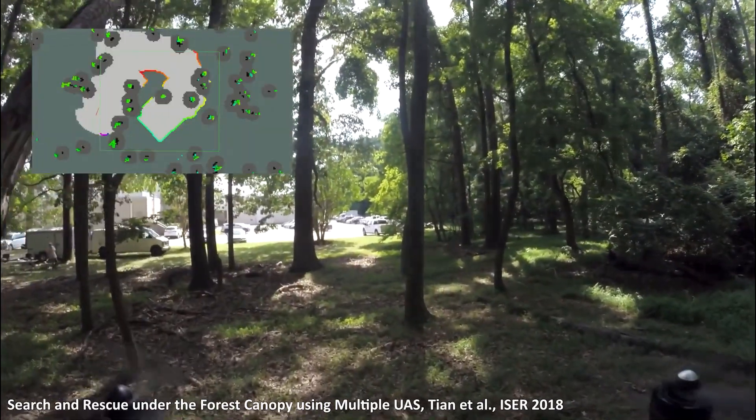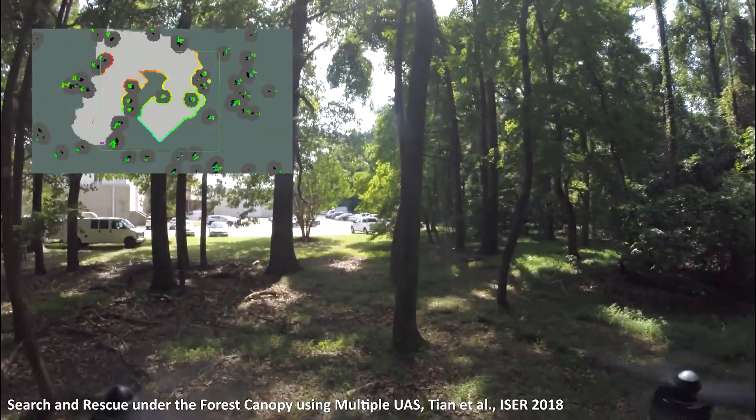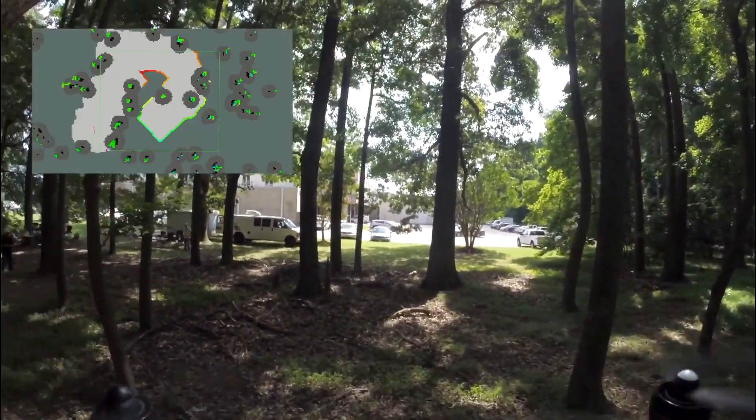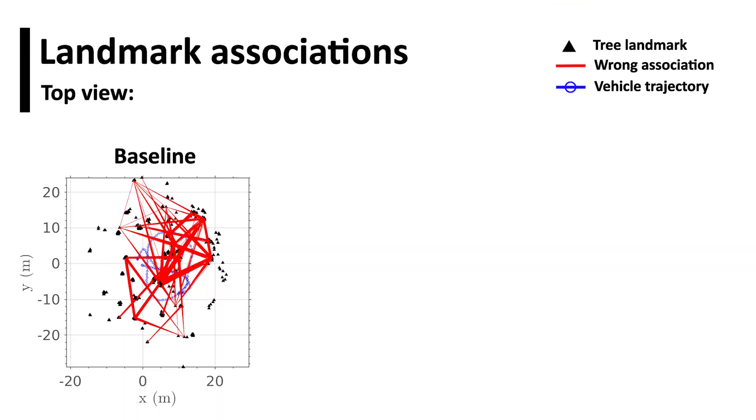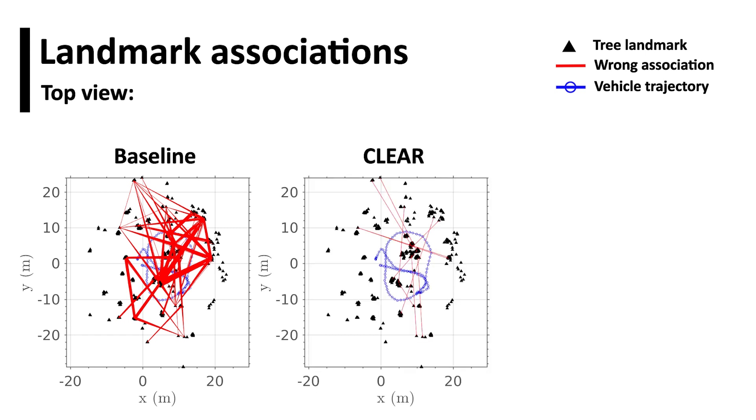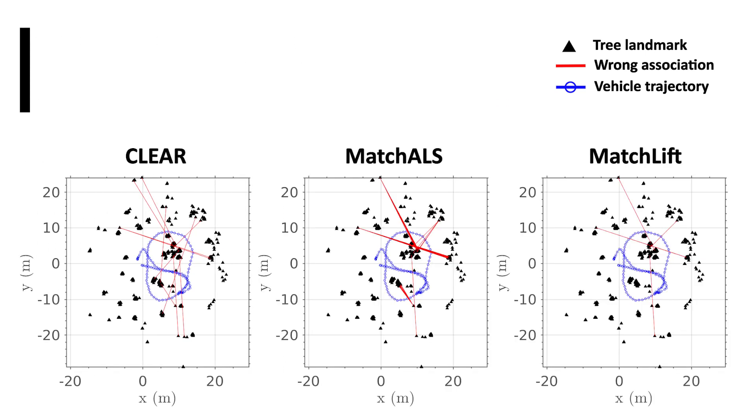Our goal is to fuse identical landmarks across a set of local maps and estimate the vehicle's trajectory. The baseline contains a large number of erroneous associations between landmarks. CLEAR removes most mismatches while having considerably faster runtime than algorithms with similar accuracy.